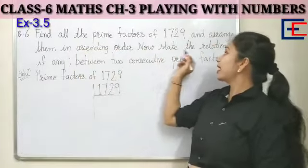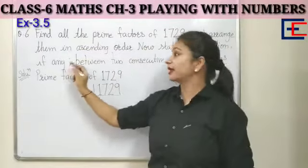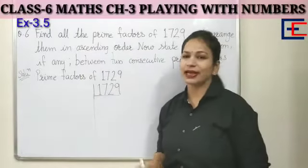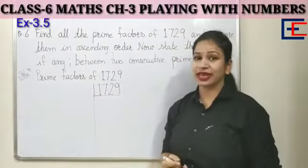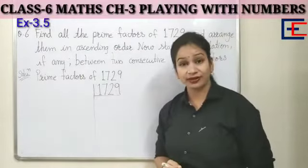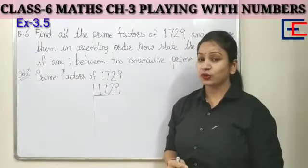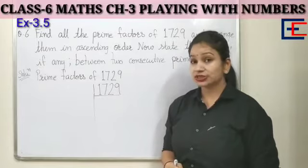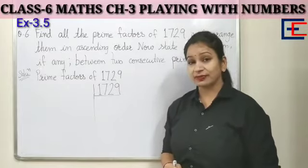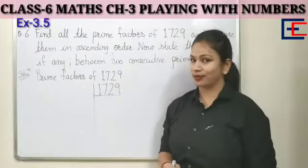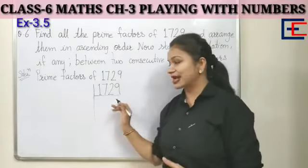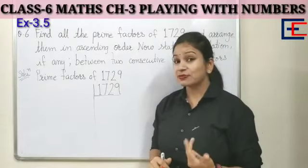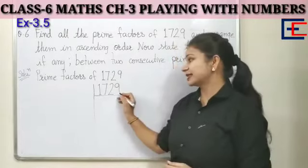Now state the relation, if any, between two consecutive prime factors. First, we have to find the prime factors of 1729, then arrange them in ascending order, and then find the relation between two consecutive prime factors. We will start with the prime factors first.